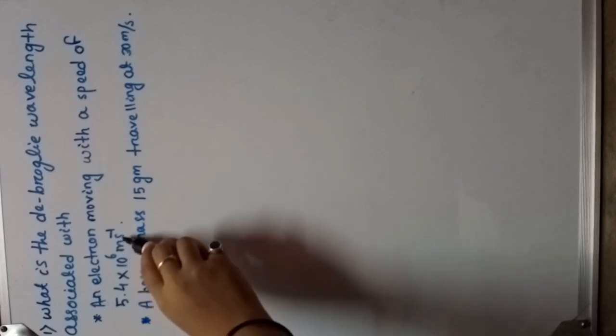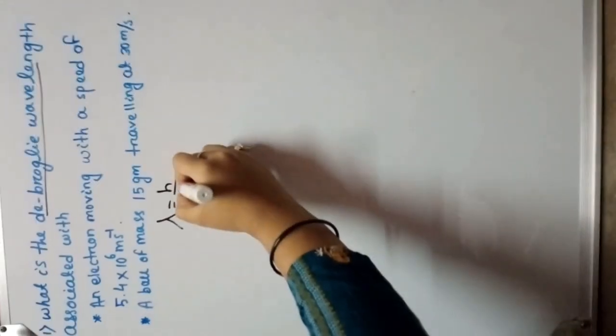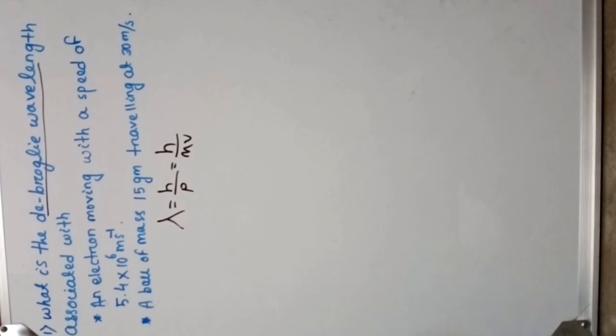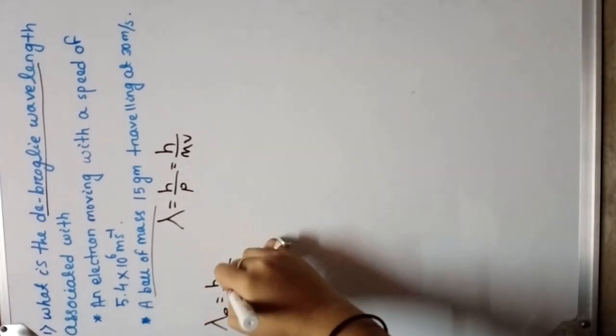Here is an example question: What is the de Broglie wavelength associated with an electron moving with speed 5.4 into 10 to the power 6 meter per second, and a ball of mass 15 gram traveling at 30 meter per second? We know that lambda equals to H by p or H by mv.